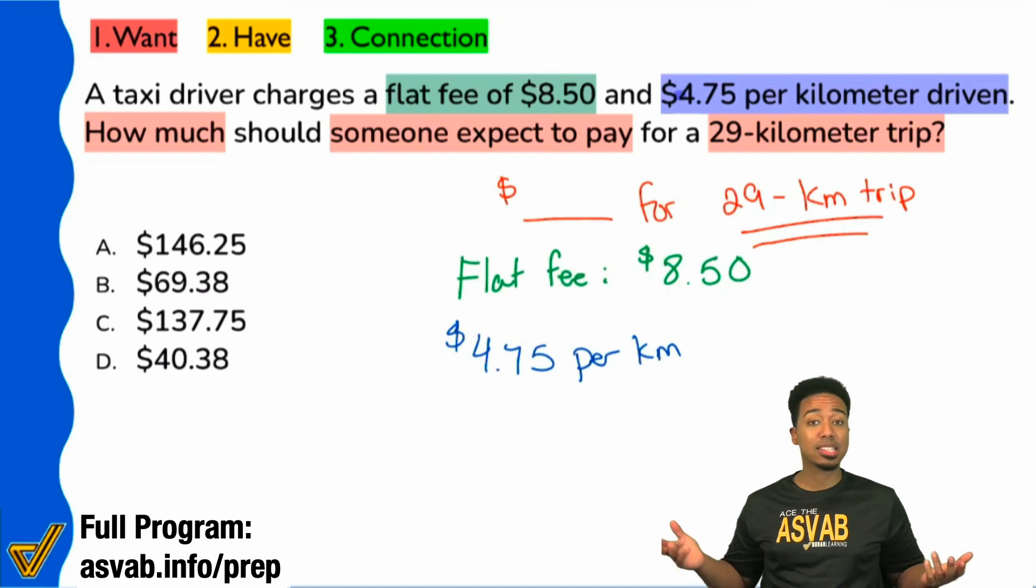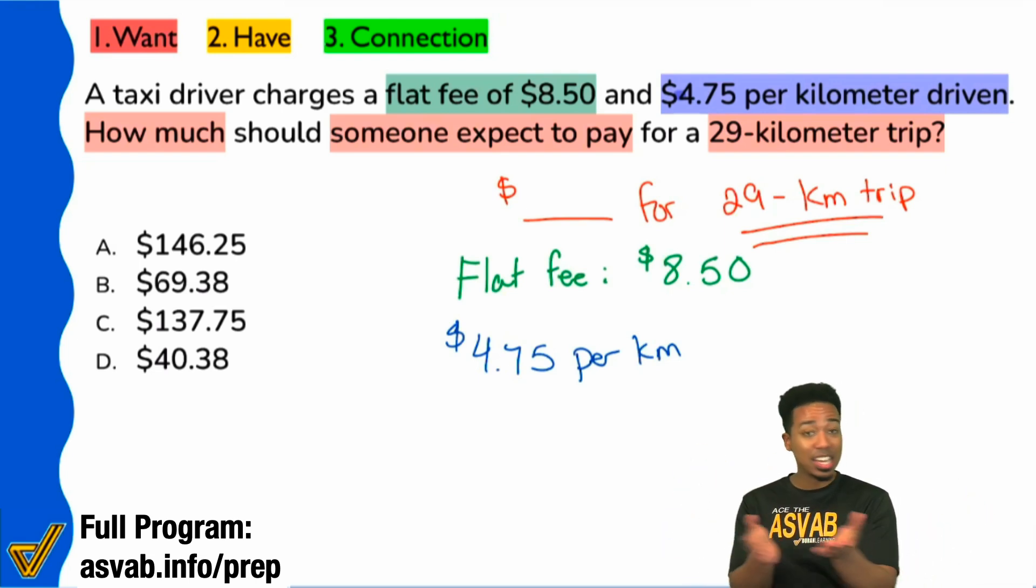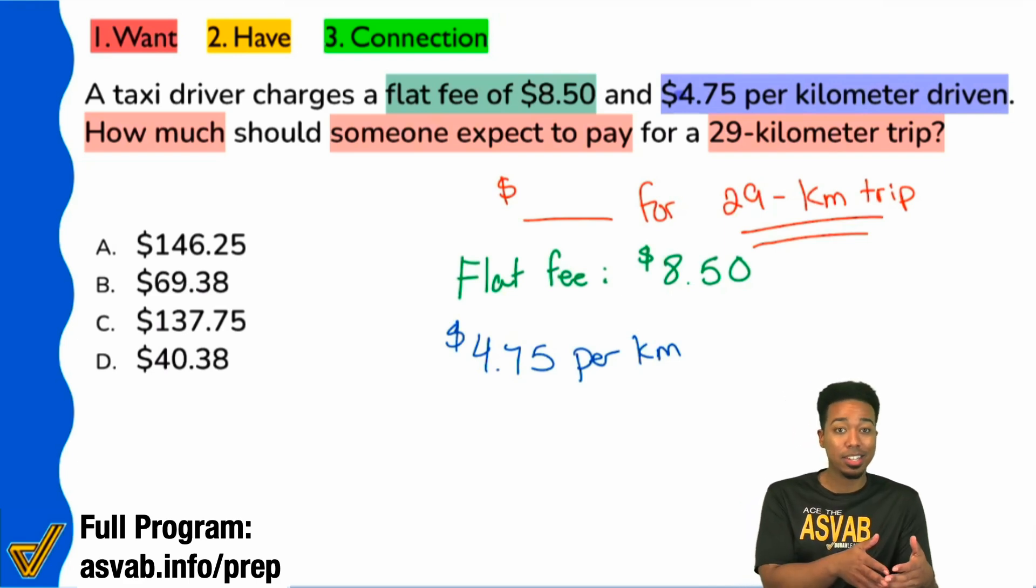The $8.50 stays the same because it's a flat fee. That's what you're charged just to get in this guy's cab. That's the price to get in. And then from there, you are charged for the distance that you travel. And since we went 29 kilometers and we're expected to pay $4.75 per kilometer, what are we supposed to do with the $4.75 and the $29?